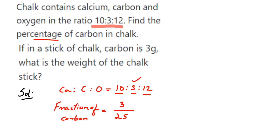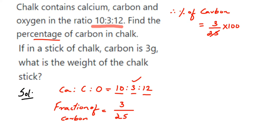To find the percentage from a fraction, you just multiply by 100. So the percentage of carbon = (3/25) × 100. Cancel 25 and 100 — 25 fours are 100 — so we get 12. Therefore, 12% of a chalk is carbon.